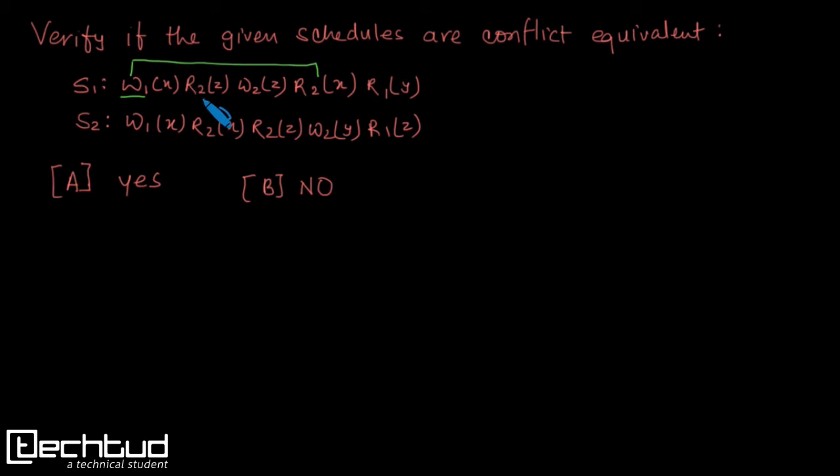Now let's find out other. So this is R2. Now we have to find out some write operation. Yes, it is here but it belongs to same transaction. So it won't be conflicting. So we don't have any other conflicting operation.